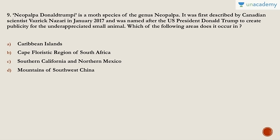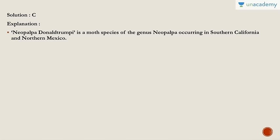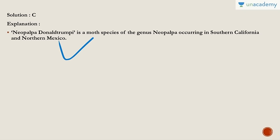Question nine: Neopalpa donaldtrumpi is a moth species of the genus Neopalpa. It was named after Donald Trump so that more news could be generated about this underappreciated small animal. Which of the following areas does it occur in? It occurs on the border of the United States and Mexico — specifically southern California and northern Mexico. The answer is C.